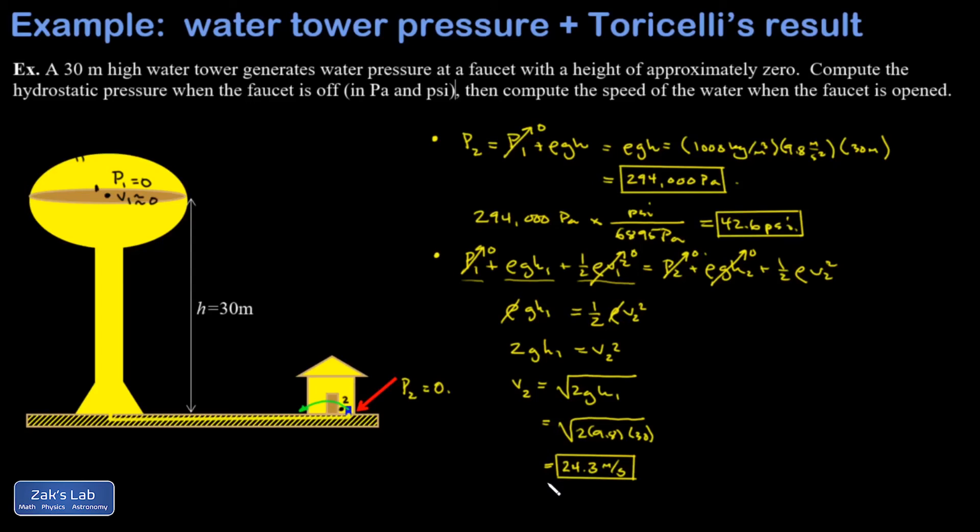It's not just a minor correction. So if you were to actually test this, you're going to find a speed way less than this just because of the fluid friction in the water system. One additional note here, this expression, V2 equals square root 2gh, is known as Torricelli's result.